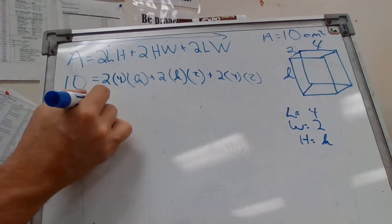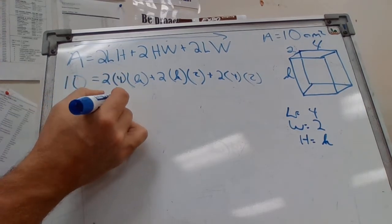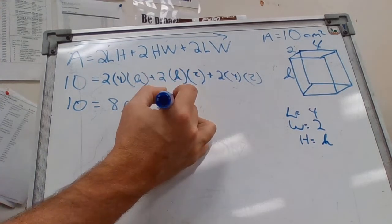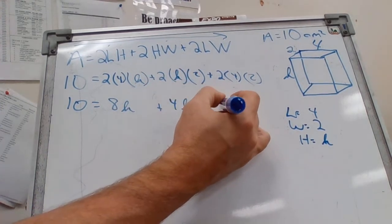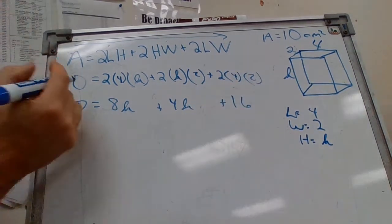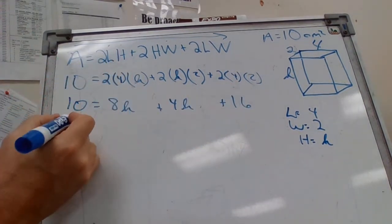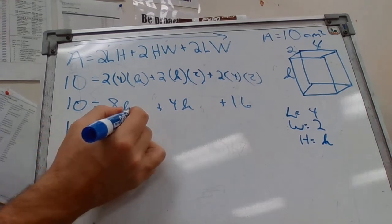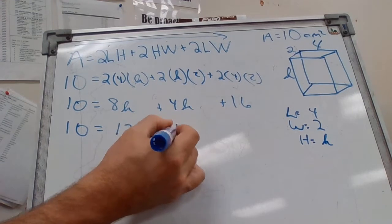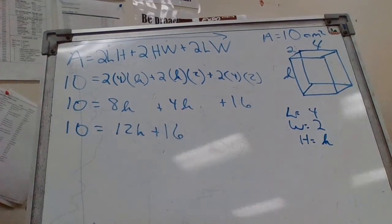We've got 10 equals, that's 8H plus 4H plus 2 times 4, 8, that's 16. So we can combine some of these like terms. We've got 10 equals, we'll combine these two right here which is 12H, bring your 16 down.